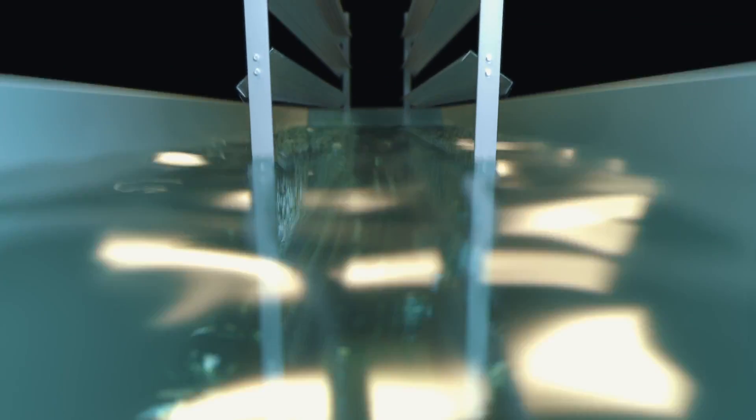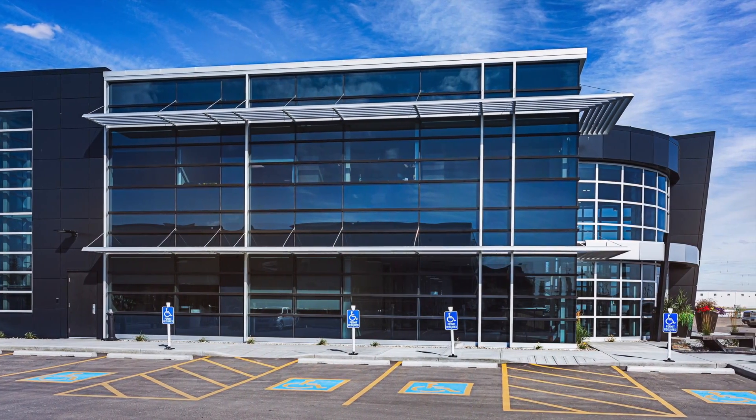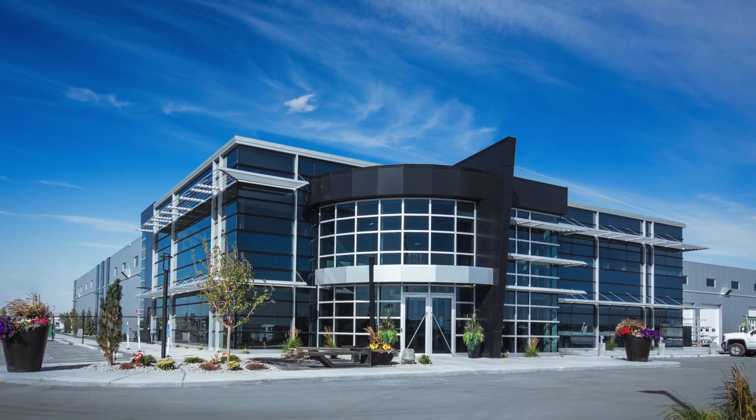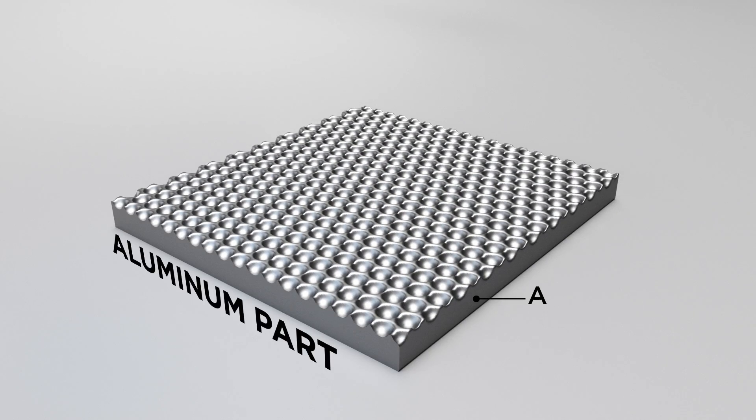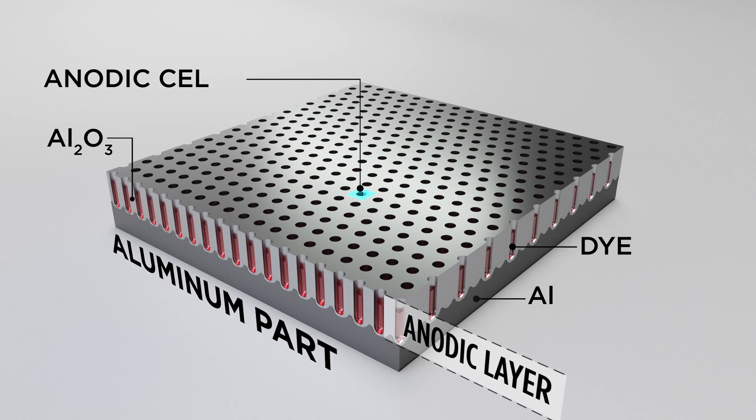Anodizing refers to the electrochemical process that changes the surface of a metal into a corrosion-resistant, durable, and aesthetically pleasing anodic oxide finish. An anodized material surface is fully integrated into the aluminum substrate and cannot be chipped off or removed.